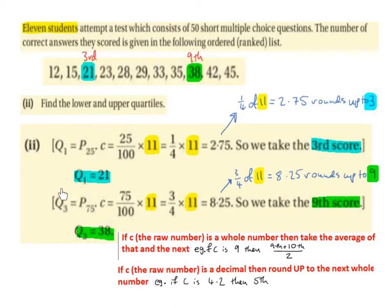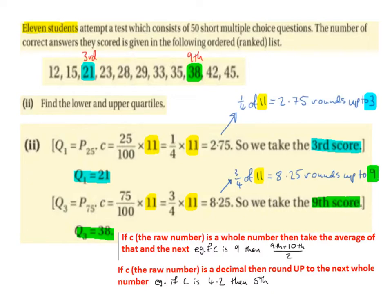For Q3, the upper quartile, this is the same as the 75th percentile. The raw number is 75 over 100 times 11, which is the same as 3 quarters times 11, which is 8.25. So we round up to 9 — we always round up with percentiles. So we take the 9th score. Counting along, the 9th score is 38. So Q3, the upper quartile, is 38.